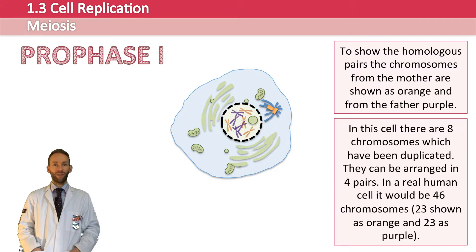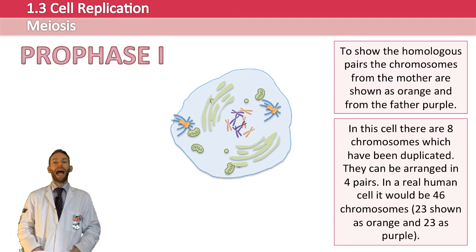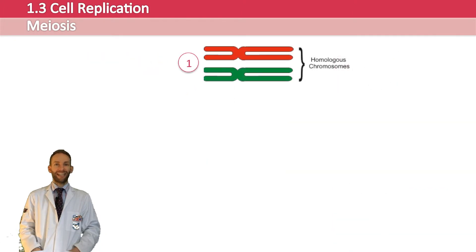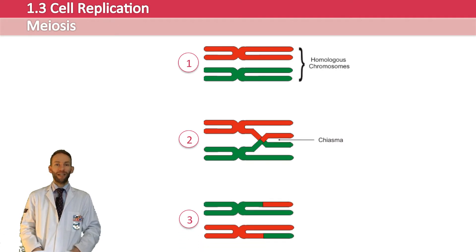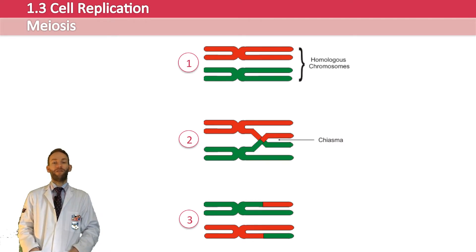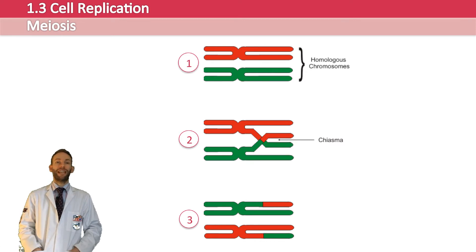Then we enter prophase 1. The centrioles begin to move to opposite poles, the nucleus breaks down, followed by the nuclear envelope, and the duplicated chromosomes are clearly visible with the two sister chromatids joined by the centromere — that's the same as mitosis. However, the difference is that the homologous chromosomes pair up with each other. Chromosome number one will find the other chromosome number one and go next to it, and a very cool process occurs where they cross over — swapping bits of their DNA. Little bits detach and reattach to the other member of the pair. They can do this because they're homologous and have the same genes, just different alleles or versions. This adds lots of genetic variation to the offspring, which is really the main point of meiosis.